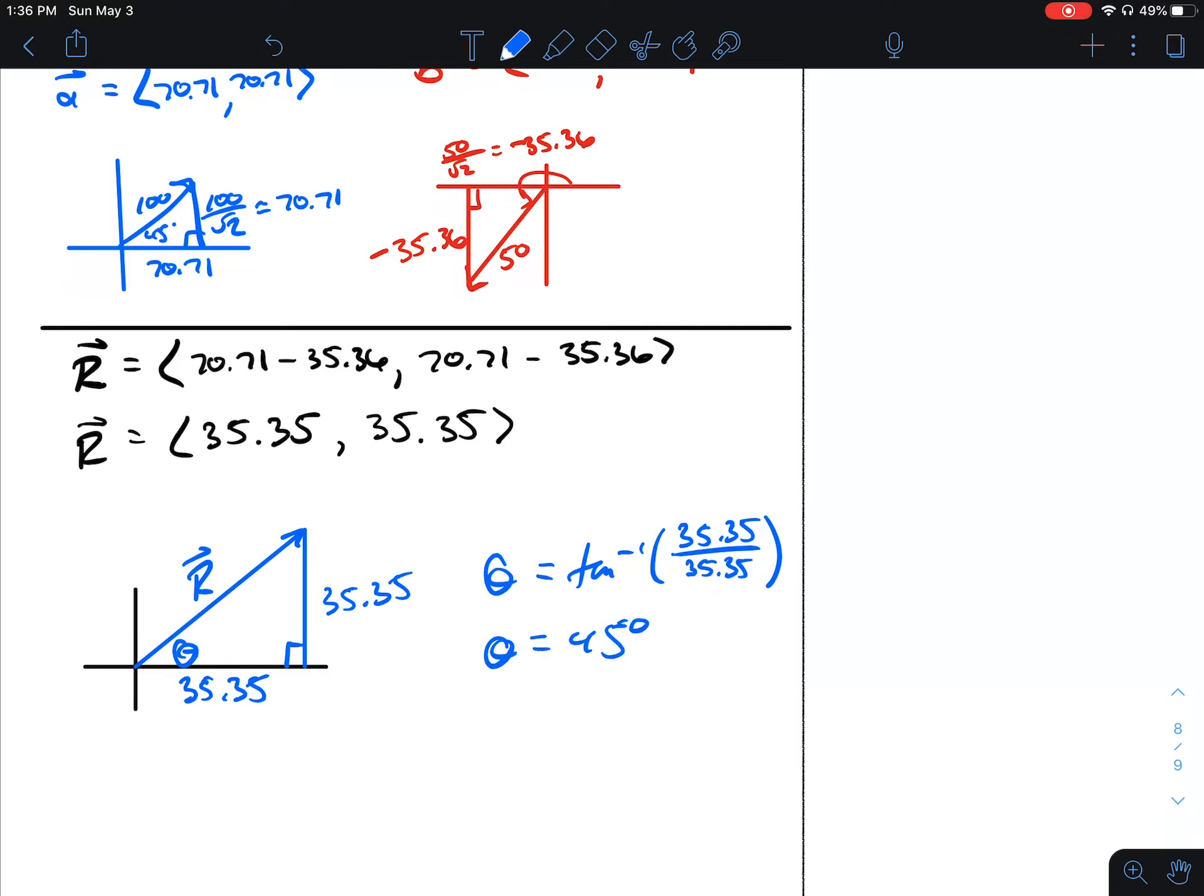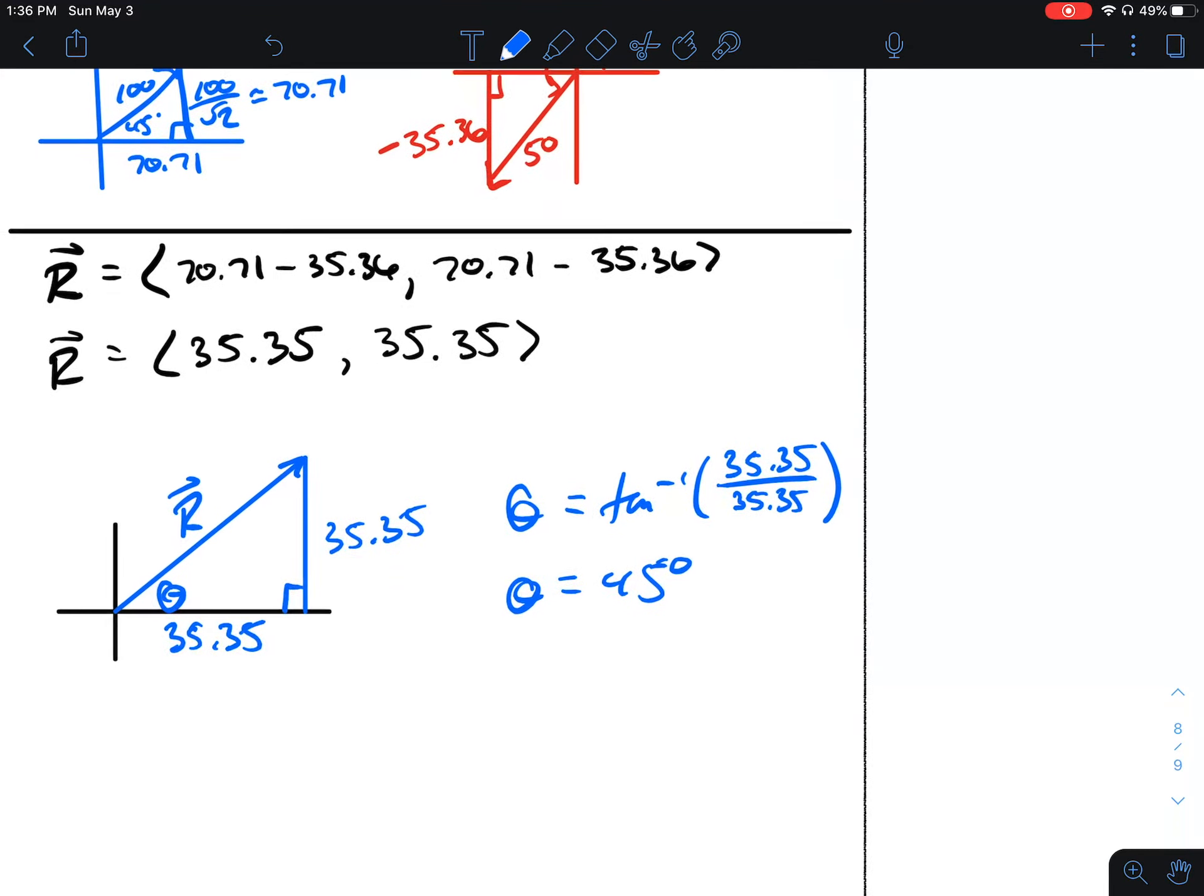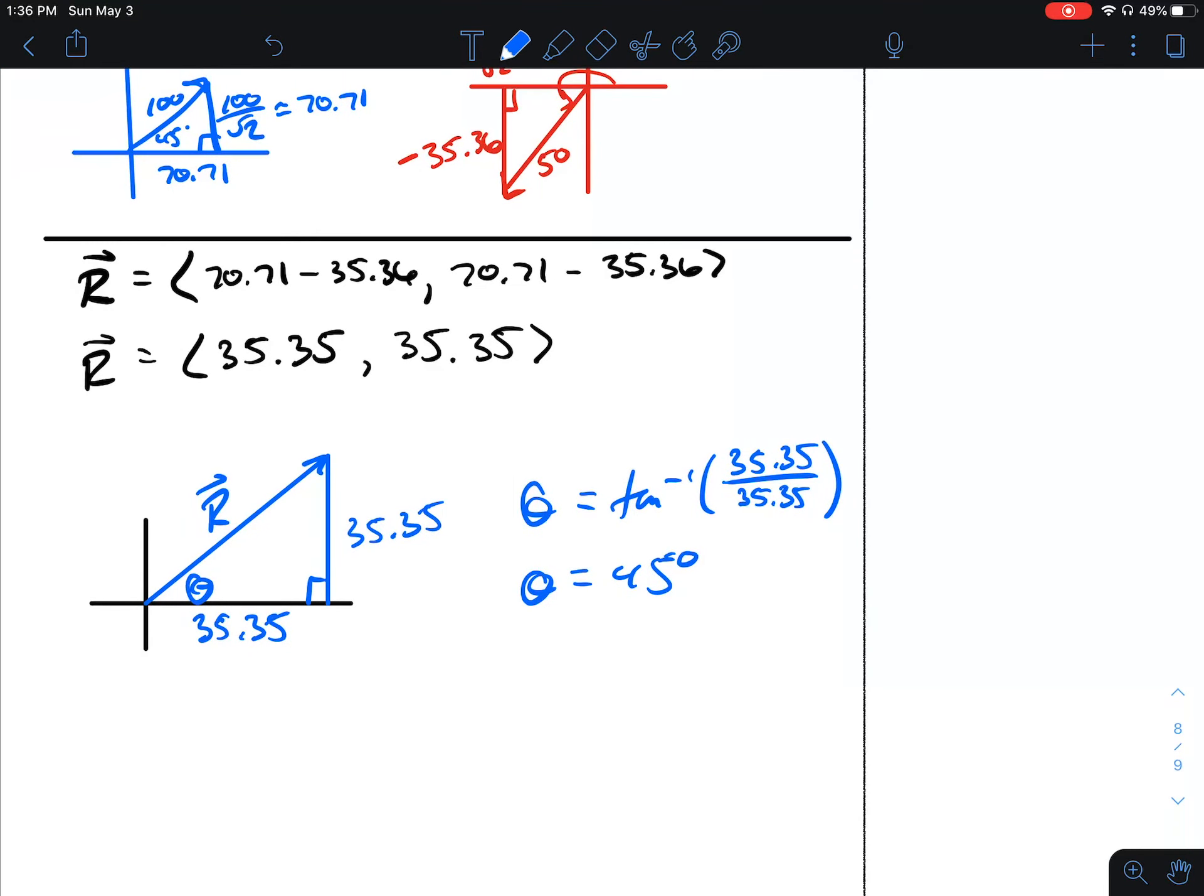And I'll explain why that angle comes up again, because that was the beginning of one of the vectors. And then the resultant vector is the square root of the x component squared plus the y component squared.